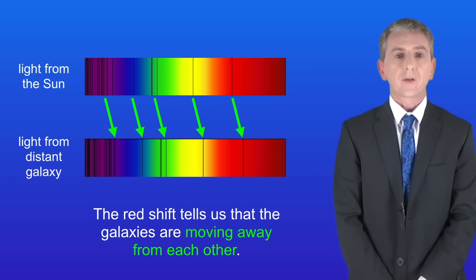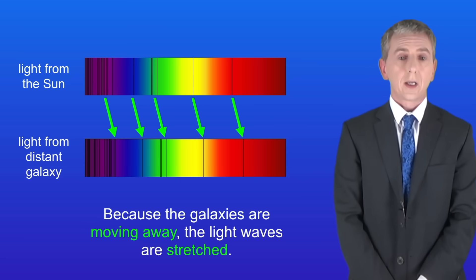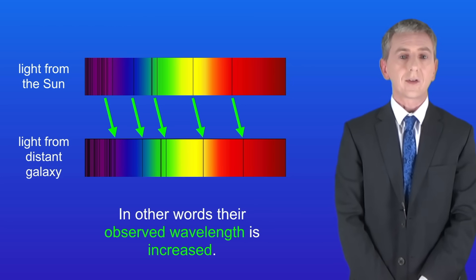The redshift tells us that the galaxies are moving away from each other. Because the galaxies are moving away the light waves are stretched. In other words their observed wavelength is increased.